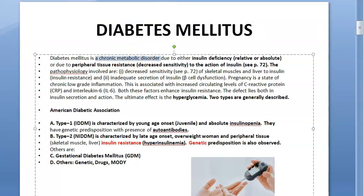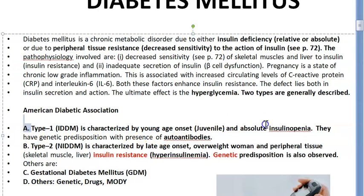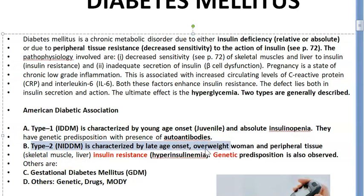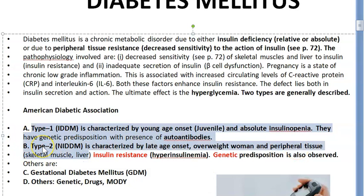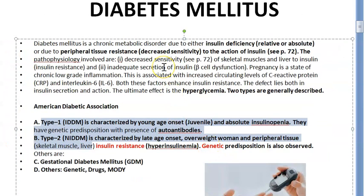Diabetes mellitus is a chronic metabolic disorder. There can be either insulin deficiency — as in Type 1 diabetes mellitus — or, as in Type 2 diabetes mellitus, there can be enough insulin but there is insulin resistance, meaning the cells do not use insulin to metabolize glucose. So there will be either insulin deficiency or decreased sensitivity to the action of insulin.